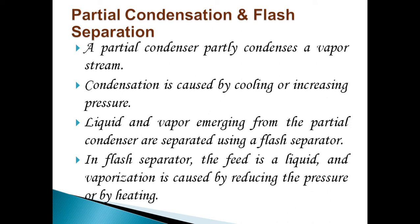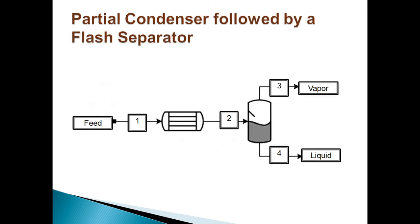Condensation is caused by cooling or increasing pressure. Liquid and vapor emerging from the partial condenser are separated using a flash separator. As shown in figure, flash separator splits the liquid feed into vapor and liquid phase products.